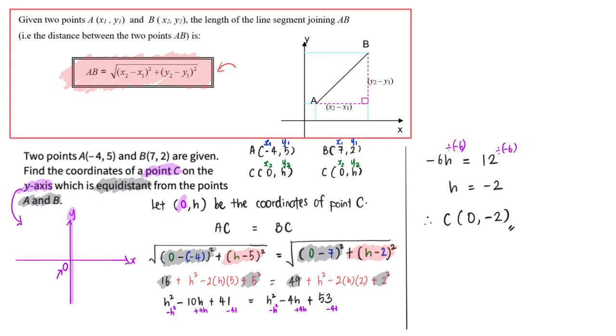And we could do that from the next piece of information where they told us that point C is equidistant from points A and B. So that is where I apply the formula for the length of the line segment, and thereafter I have successfully formed an equation, I solve for the unknown.